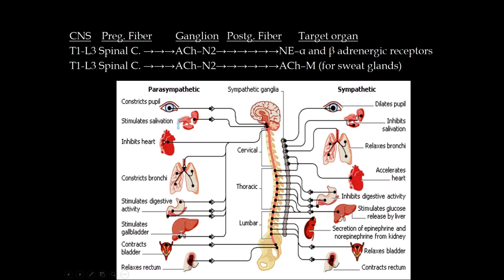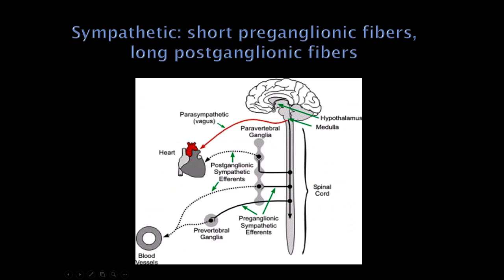A big-picture difference between sympathetics and parasympathetics: the paravertebral and prevertebral ganglia for sympathetics aren't that far from the spinal cord, so the sympathetic preganglionic fiber is actually pretty short. With the parasympathetics, the vagus nerve is entirely a preganglionic fiber — so the parasympathetics have a very long preganglionic fiber and then a very short postganglionic fiber, here supplying the heart.